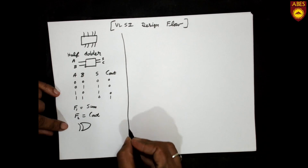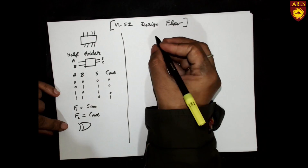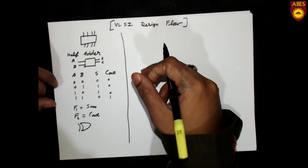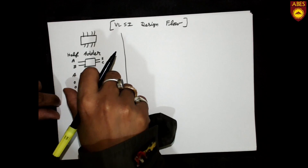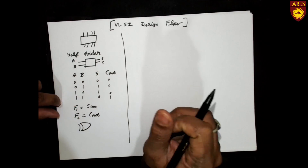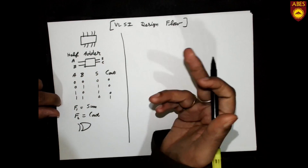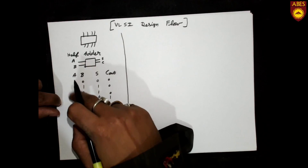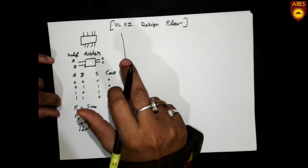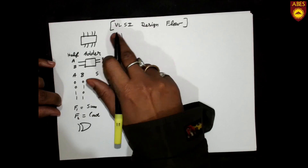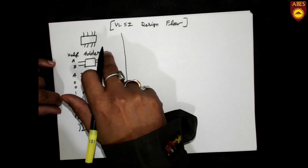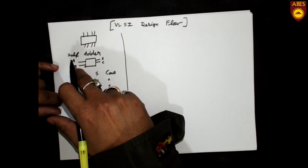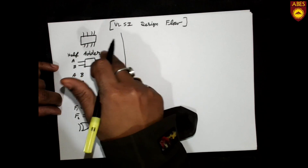Keeping these steps in mind, let's see the VLSI design flow. When we have a large number of inputs, we can't write a truth table manually, so we use Hardware Description Language (HDL) for describing the behavior of the circuit. The first step in the VLSI design flow mirrors what we did for the half adder — describing the inputs and outputs.